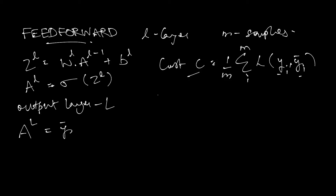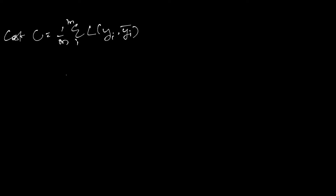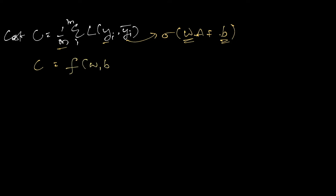To minimize the cost we will use the method of gradient descent. The cost function depends on m, which is a constant, y_i, which is also a constant, and y_i-bar, our predicted value, which equals some activation function applied to w*a + b. So the cost C depends upon the variables w and b, since everything else is a constant, and a is the input value. Our goal is to find the values of w and b such that the cost is minimum, or ideally zero. A lower cost means our predictions are closer to the actual value, and hence more accurate.